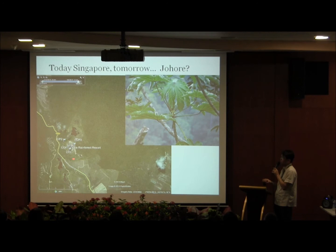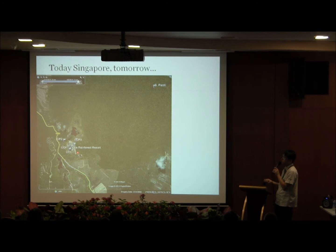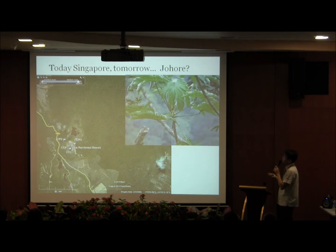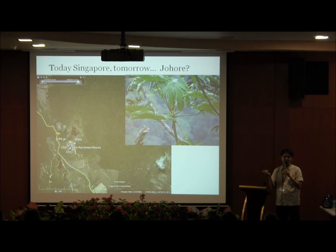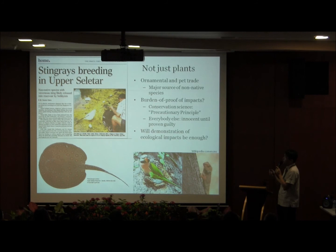We visited Gunung Kanti, a popular birding spot with a resort nearby, and we found what we identified as Cecropia pachystachya. The nearest known population is in Singapore, suggesting that the species has already spread to Malaysia, likely originating from Singapore — although proving that would require more time and resources. All we've been discussing about Cecropia applies to many other cases — Cecropia was just a case study.